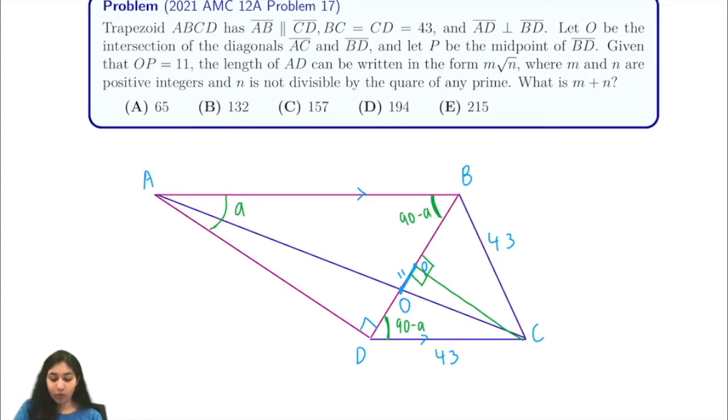This angle is 90 minus theta, and this angle will be theta to make the sum of the angles 180.